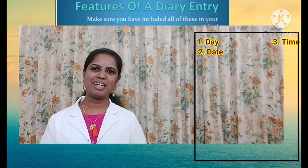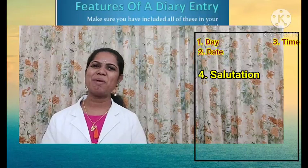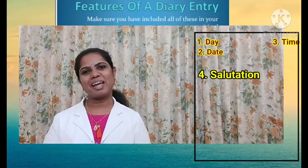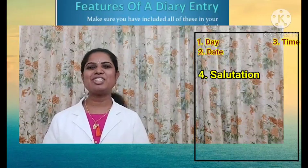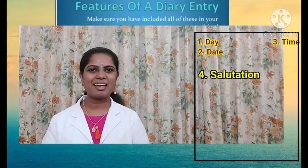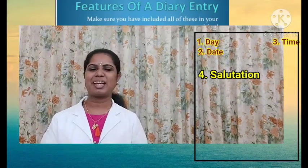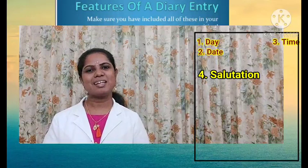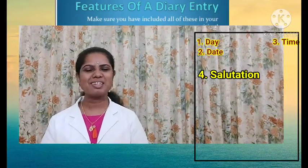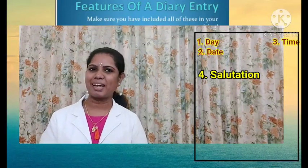Then you can give the salutation. You can imagine any name and give that imaginary name to your diary. Our Anne Frank used 'Kitty' — she used to address her diary as 'Dear Kitty.' We can also use any imaginary names; for example, 'Dear Sweetie' — any name that you like.